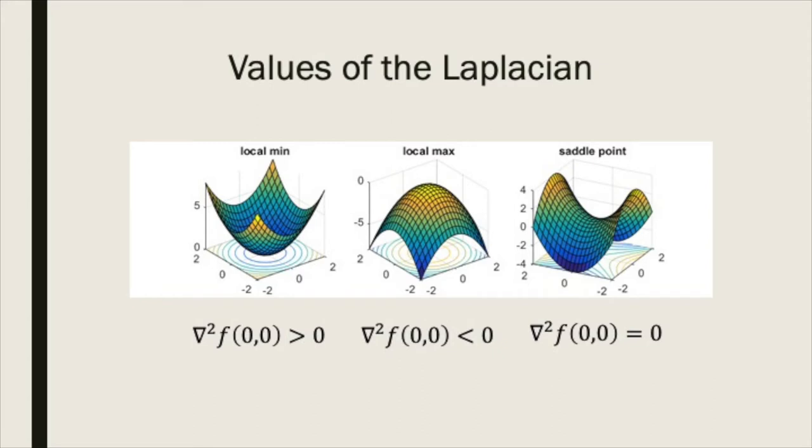Similarly, imagine you were standing at the bottom of a valley. There's nowhere to go but up. The average altitude in any small region containing the point you are standing is therefore larger than your current altitude. The Laplacian at that point is therefore positive.